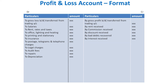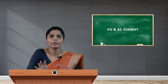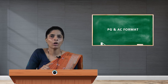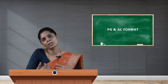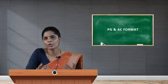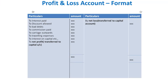Interest received from any loan given to employees or others is treated as income on the credit side. To summarize: the first transaction is gross profit or gross loss; the second is recording all indirect expenses on the debit side; and the third is recording all indirect incomes on the credit side. After that, we balance the profit and loss account to know the net profit or net loss for the current year.